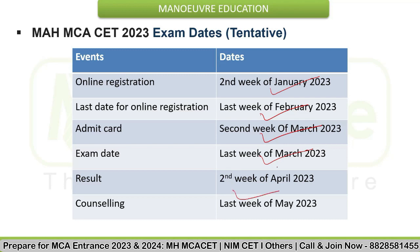As per 2019, exams were held in the month of March. During 2020, 2021, and 2022, because of COVID, exams were delayed and later held in the month of August. The same delay might be expected in 2023 — the exam might be postponed by one or two months. If not, exams will probably be conducted in the last week of March. If you have any doubts regarding the paper pattern, eligibility, etc., do comment below and we will get back to you.